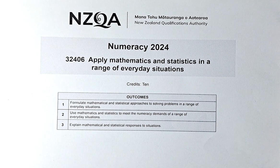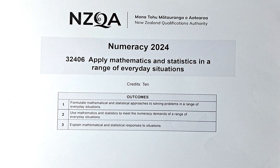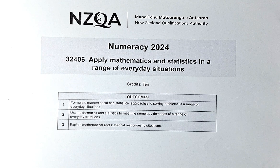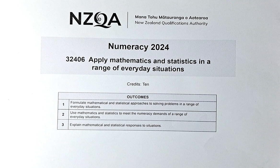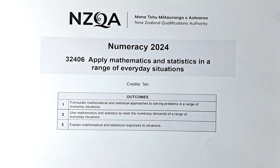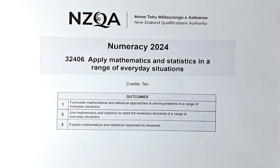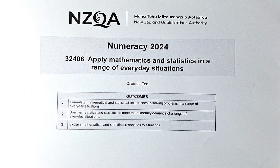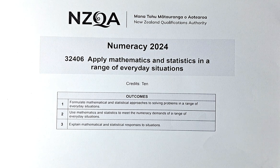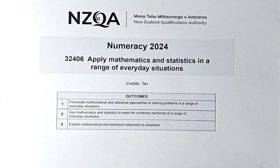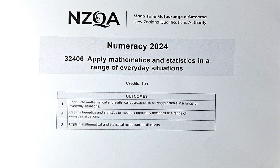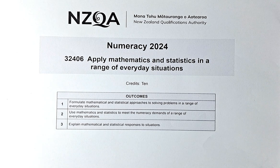Good day and welcome to video number 6 on the 2024 June numeracy exam paper called Apply Maths and Stats in a Range of Everyday Situations, paper number 32406. This is a unit standard. You either get an Achieve or not an Achieve. To get an Achieve, which is 10 credits, you need to fulfill outcomes 1, 2, and 3. Without further ado, let's do questions 3D, E, and F for this video.